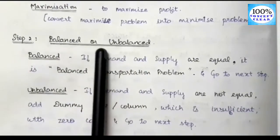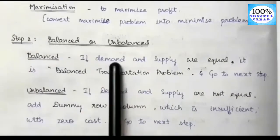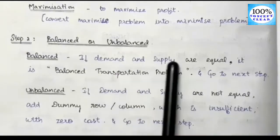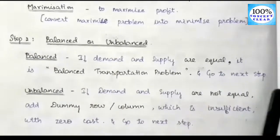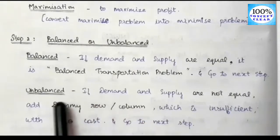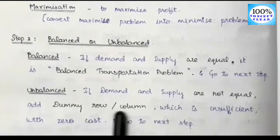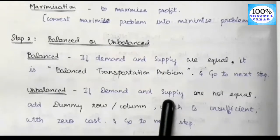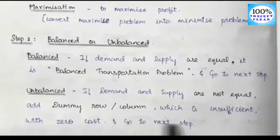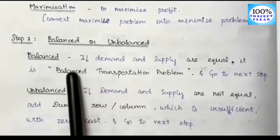Step 2 is to check if the transportation problem is balanced or unbalanced. If demand and supply are equal, it is a balanced transportation problem and we go to the next step. If demand and supply are not equal, it is an unbalanced transportation problem, and we add a dummy row or column for whichever is insufficient. Unbalanced transportation problems will be covered in a future video.